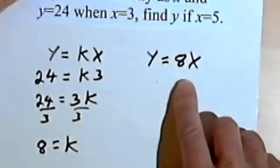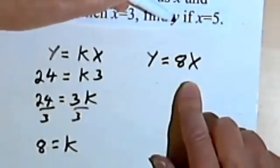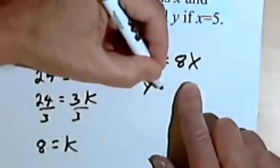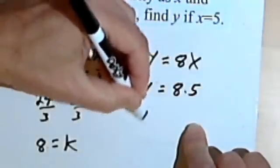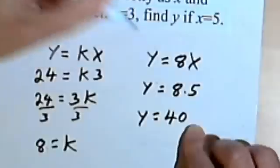Now I know you've seen equations like this before. And all they're asking is, they're saying find y if x equals 5. So we're going to replace the x with a 5, and y is going to equal 8 times 5, or 40.